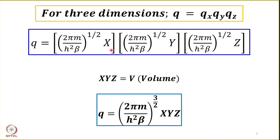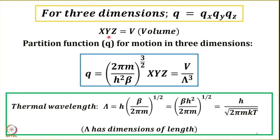Combining all three: x · y · z is the volume. The factor (2πm / h²β) appears three times. So q = (2πm / h²β)^(3/2) · xyz, and since xyz is the volume, we can write q = (2πm / h²β)^(3/2) · V. I will write the factor (2πm / βh²)^(3/2) in the form 1/λ³, using λ as the thermal wavelength.